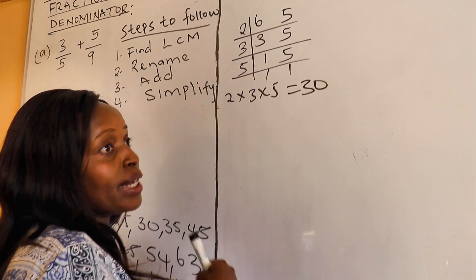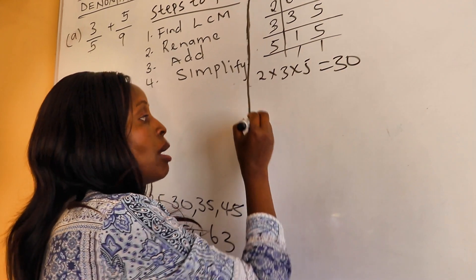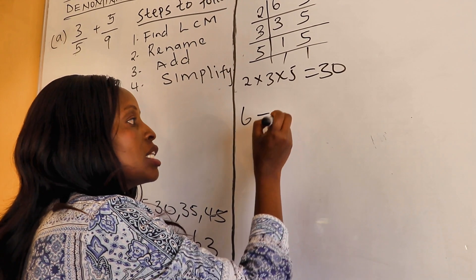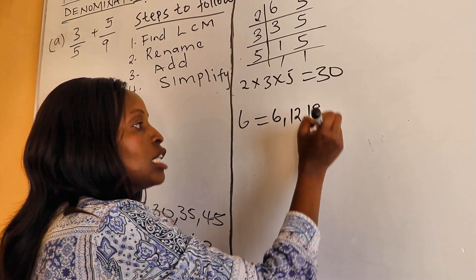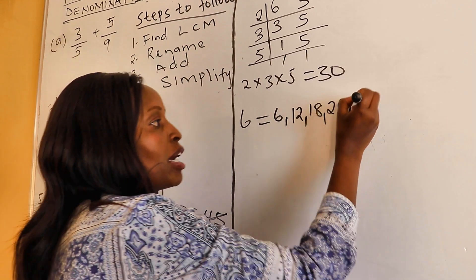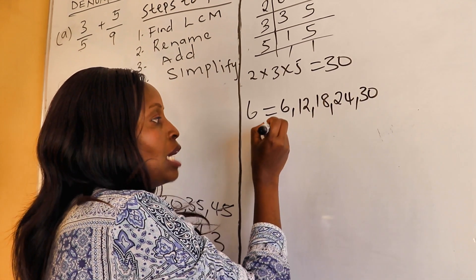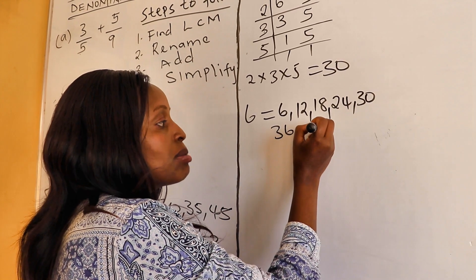Or now, we can get the LCM by getting the multiples. Multiples of 6: 6 times 1 is 6, times 2 is 12, times 3 is 18, times 4 is 24, times 5 is 30, times 6 is 36, times 7 is 42.